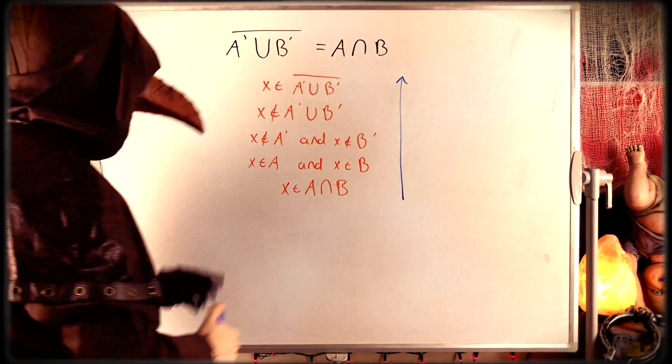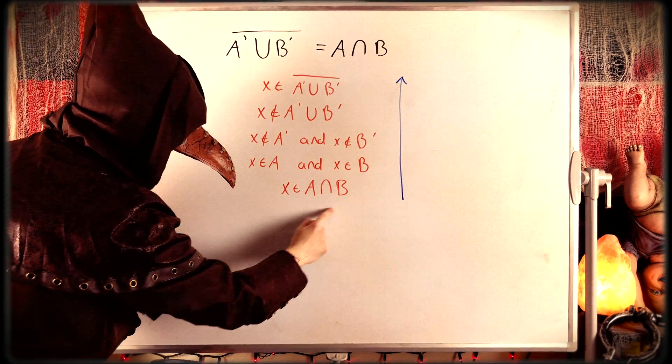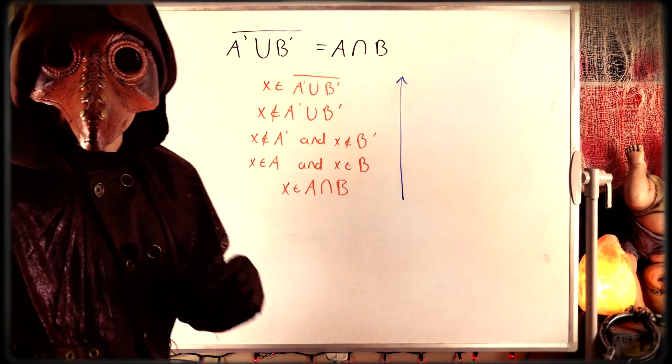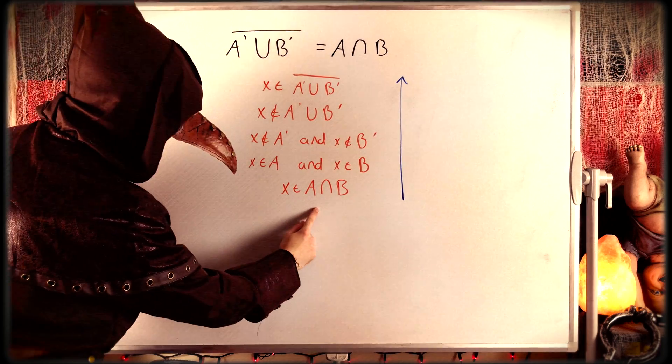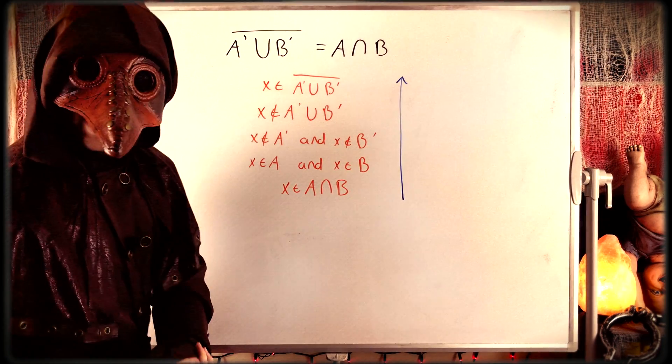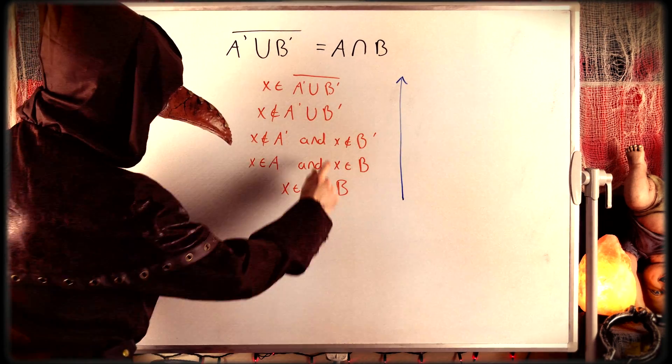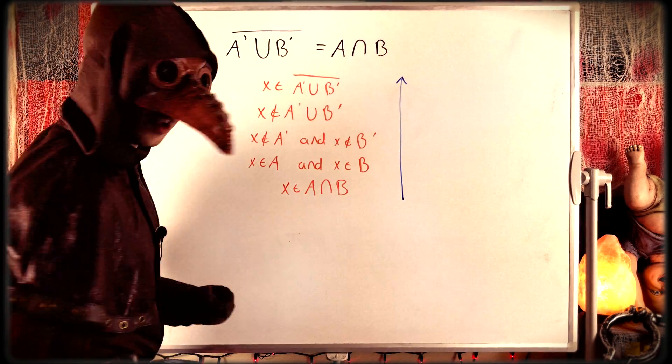We would begin by taking an arbitrary element of A intersect B. So let x be in A intersect B. Then by definition, x is in A and x is in B. Then by definition of set complement, that means x is not in the complement of A, and x is not in the complement of B.